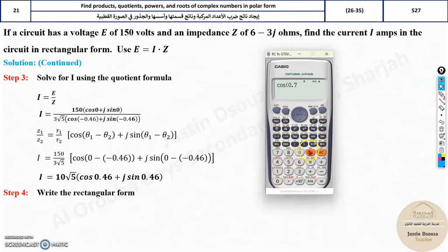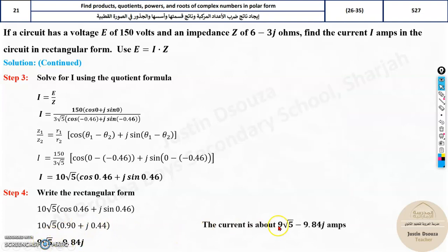But what about the rectangular form? Just multiply. You take your calculator over here. So cos of 0.46 will give you 0.896. So it's written as 0.9. And same thing with sine. What happens is it'll give you 0.44. And then multiply this by 10 root 5. And also, you need to multiply 10 root 5 by 0.44. The current is about 9 root 5 minus 9.84j amperes. So this is how we solve this problem, division.